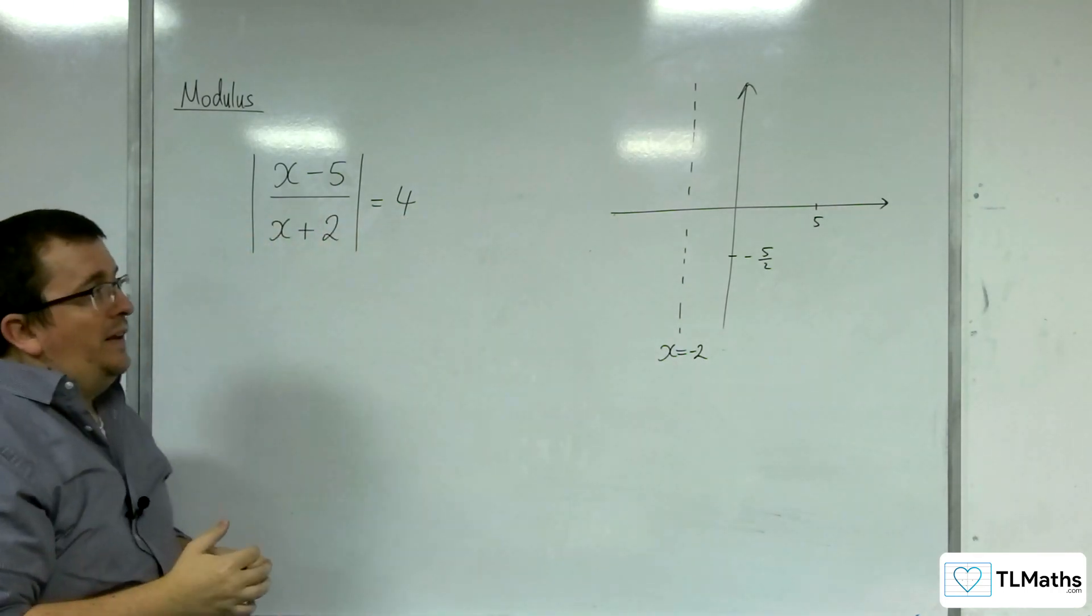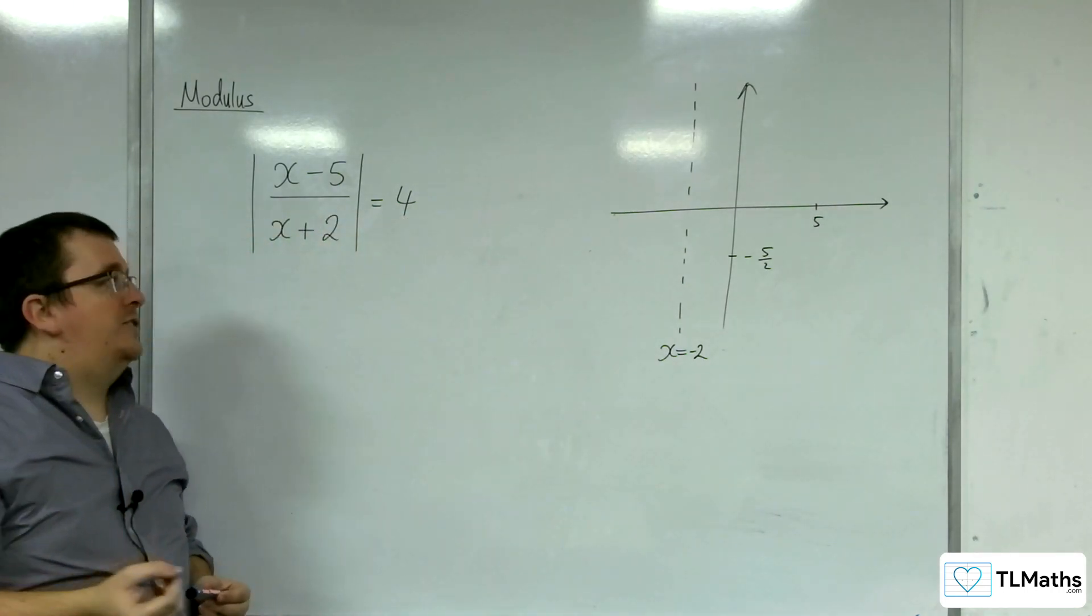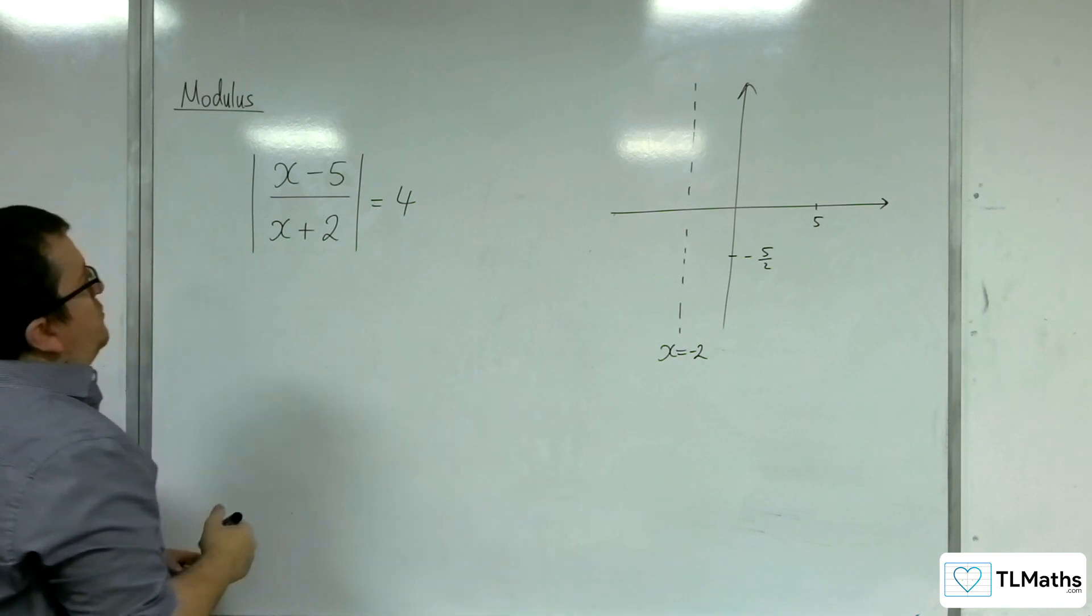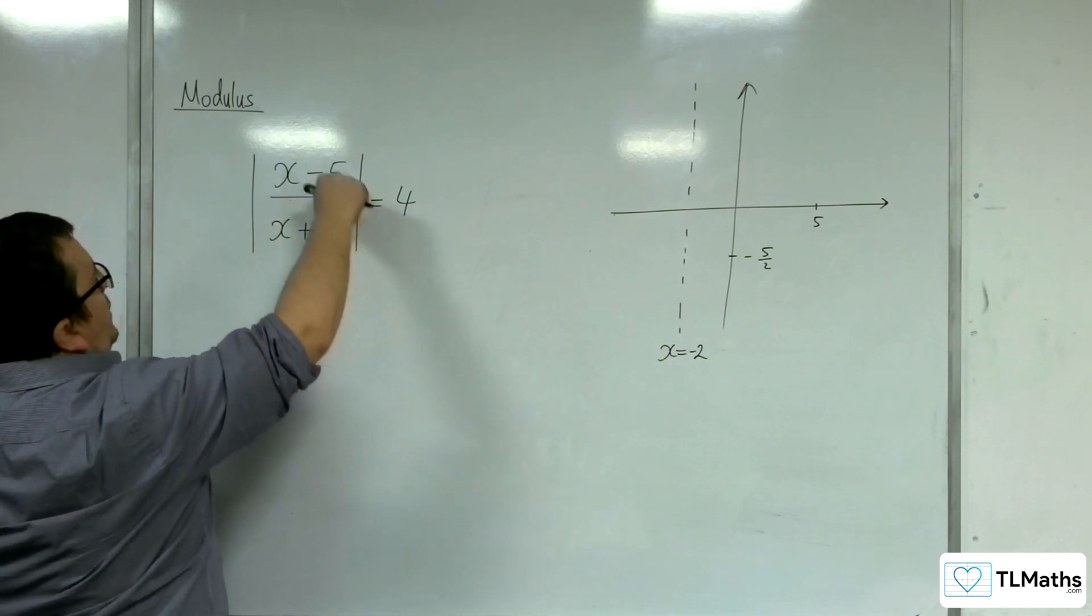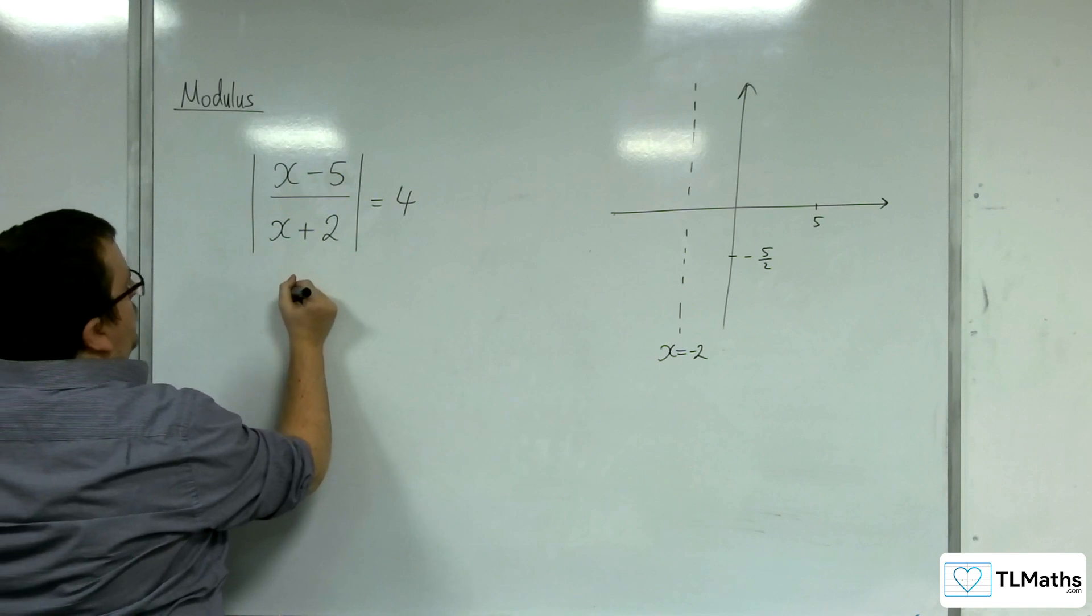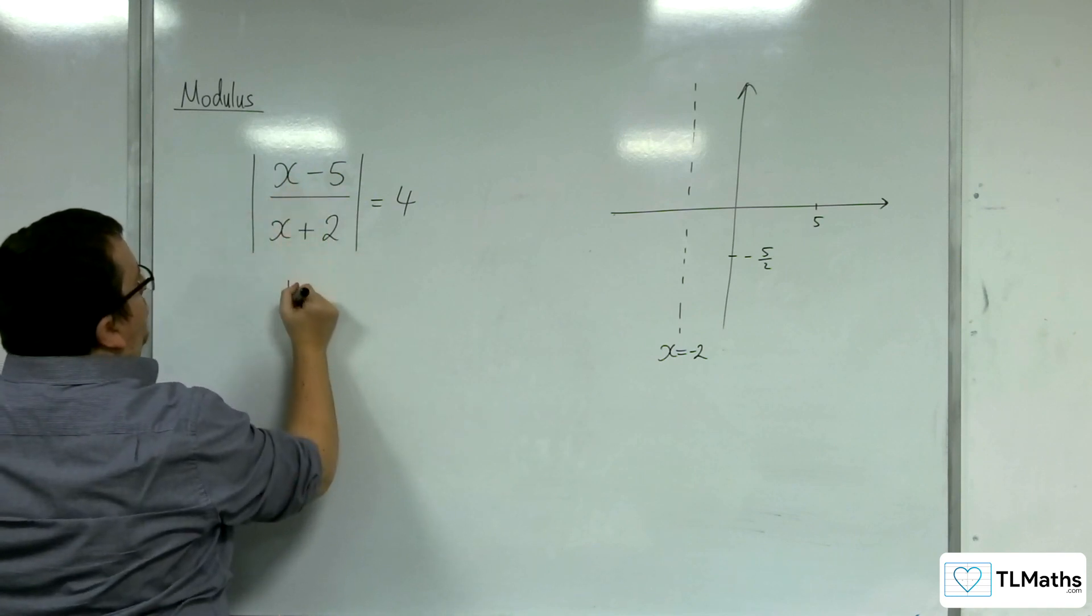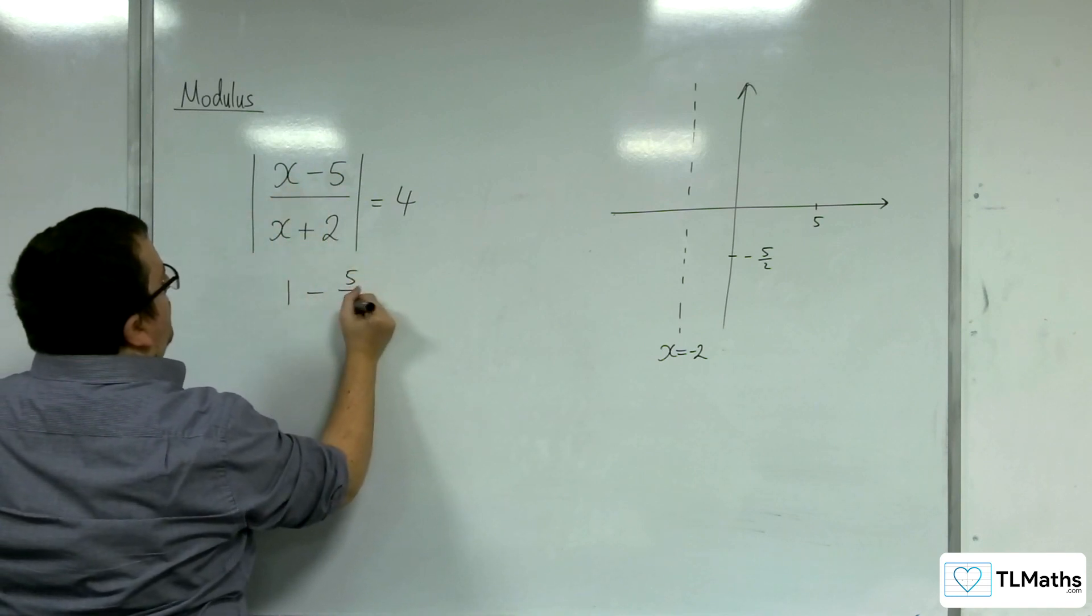And the last thing to consider with these is the horizontal asymptote. You can find the horizontal asymptote easily by dividing top and bottom of your fraction by x. So, x over x is 1, then we've got 5 over x, then we've got 1 plus 2 over x.